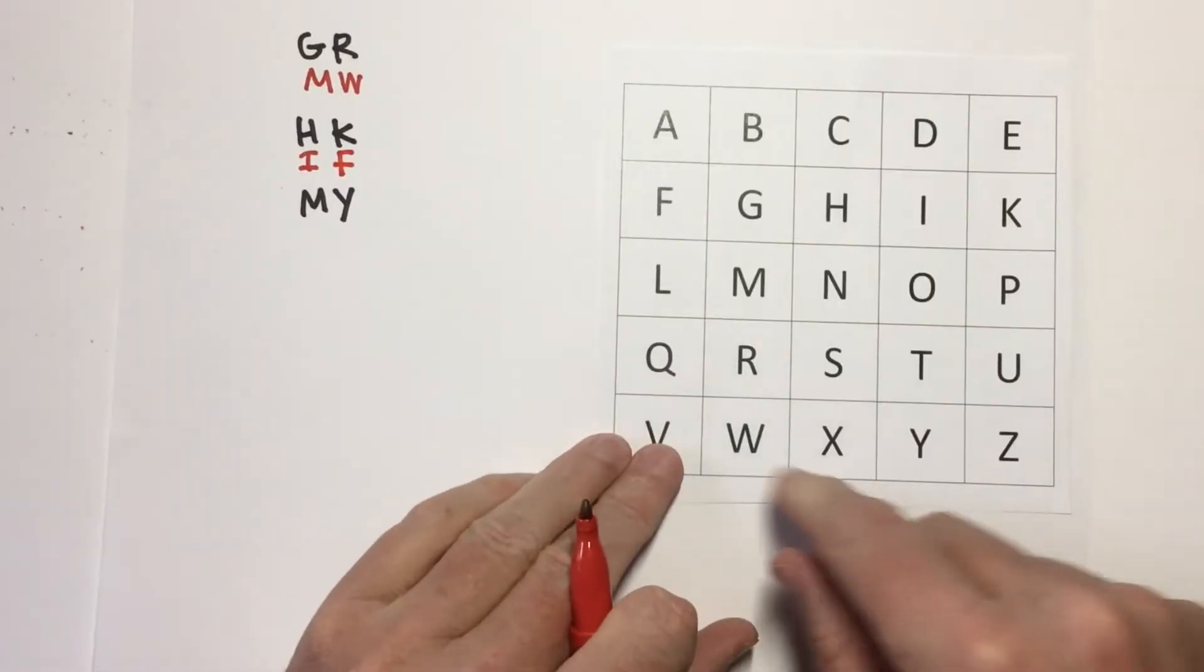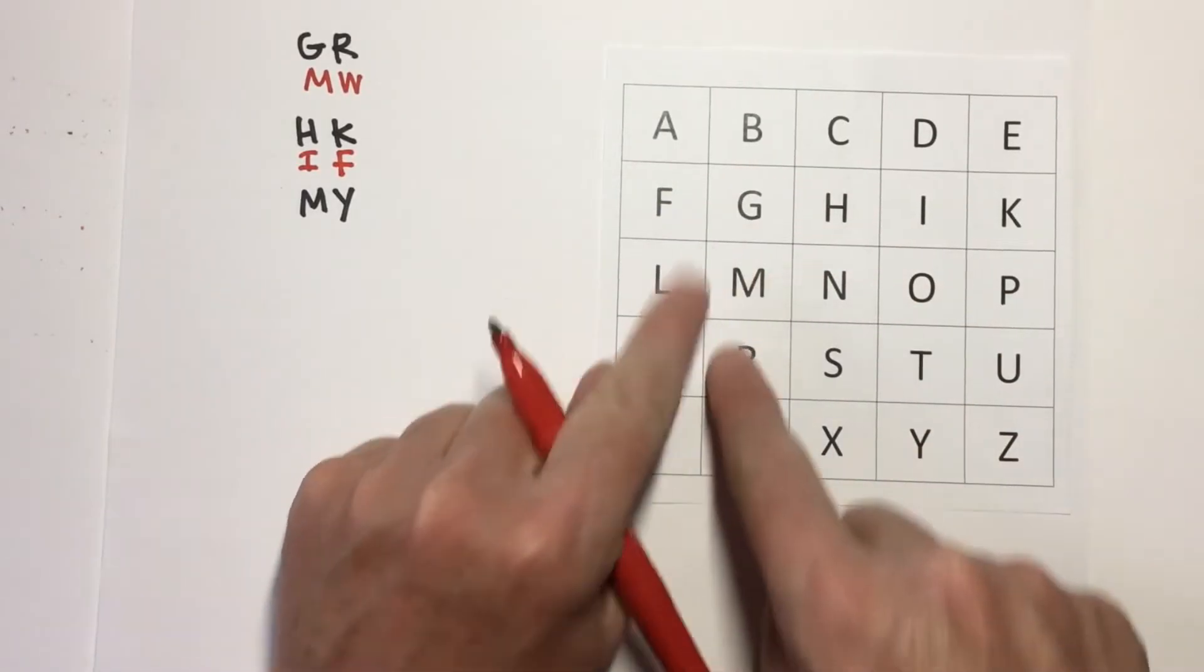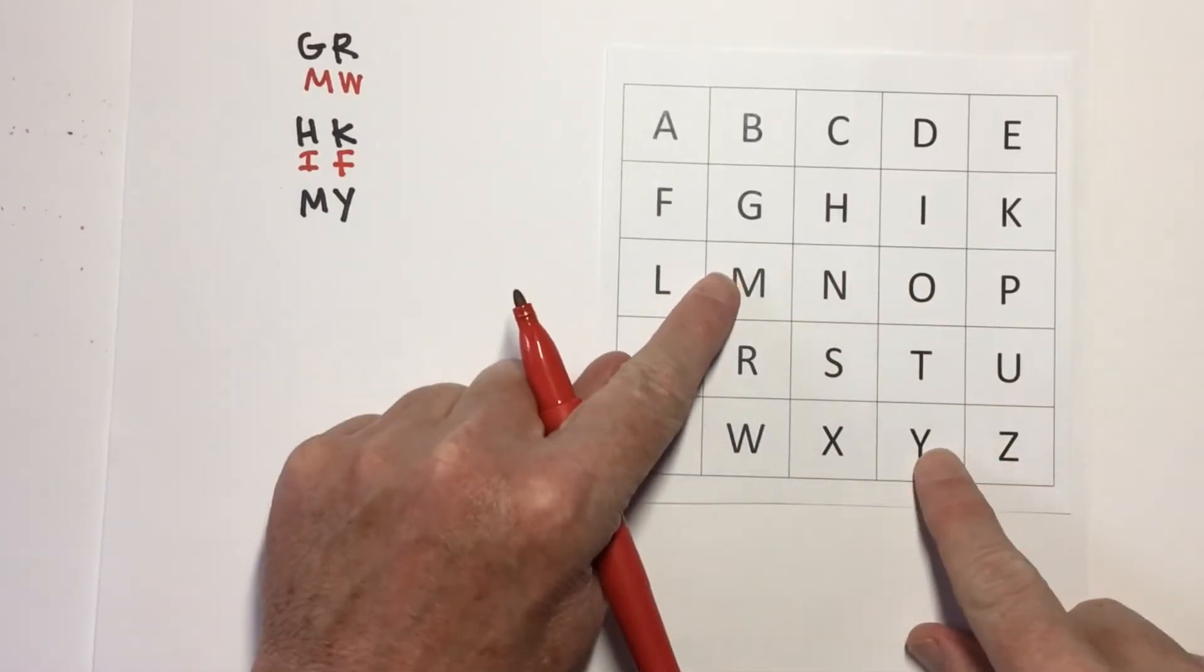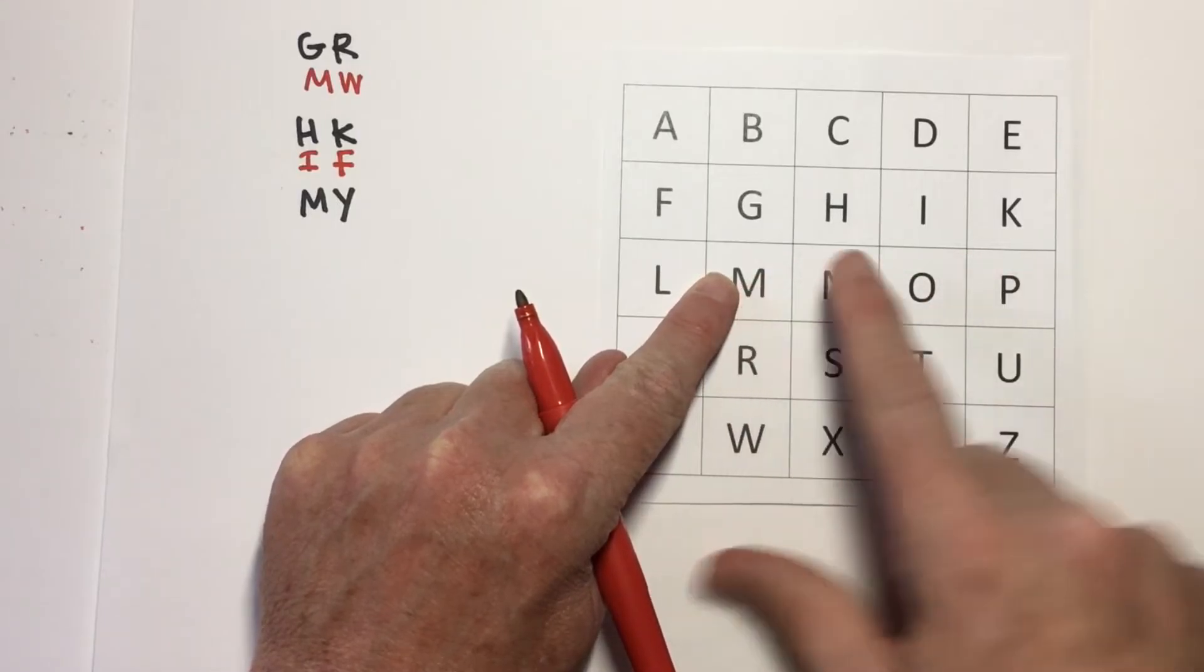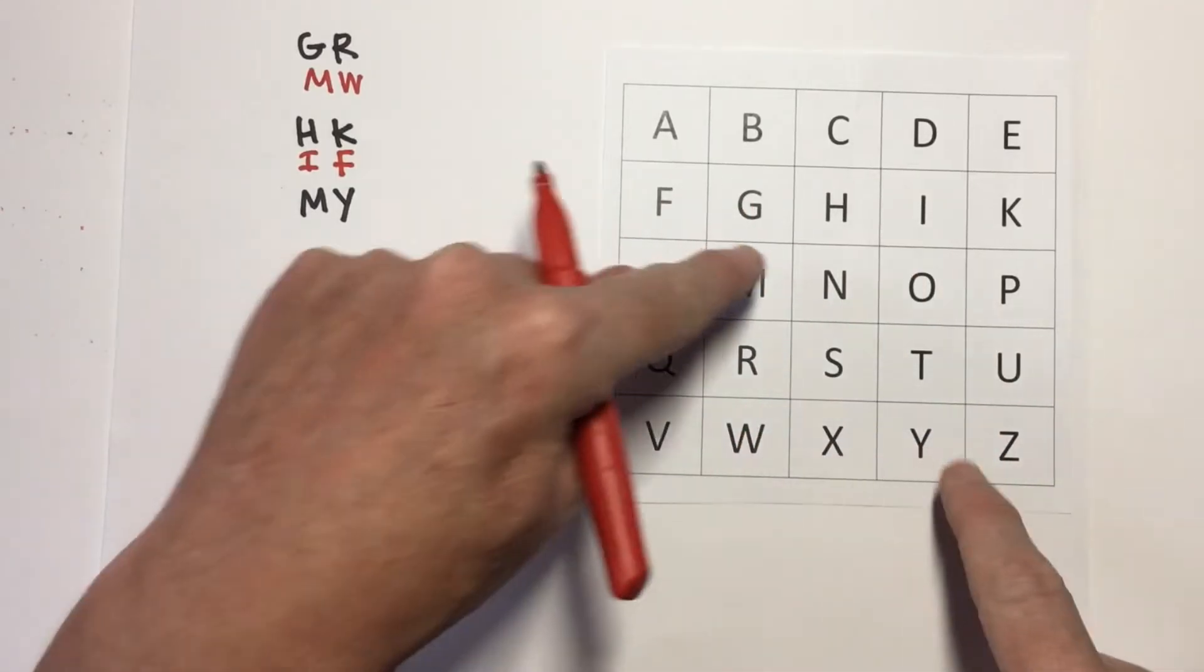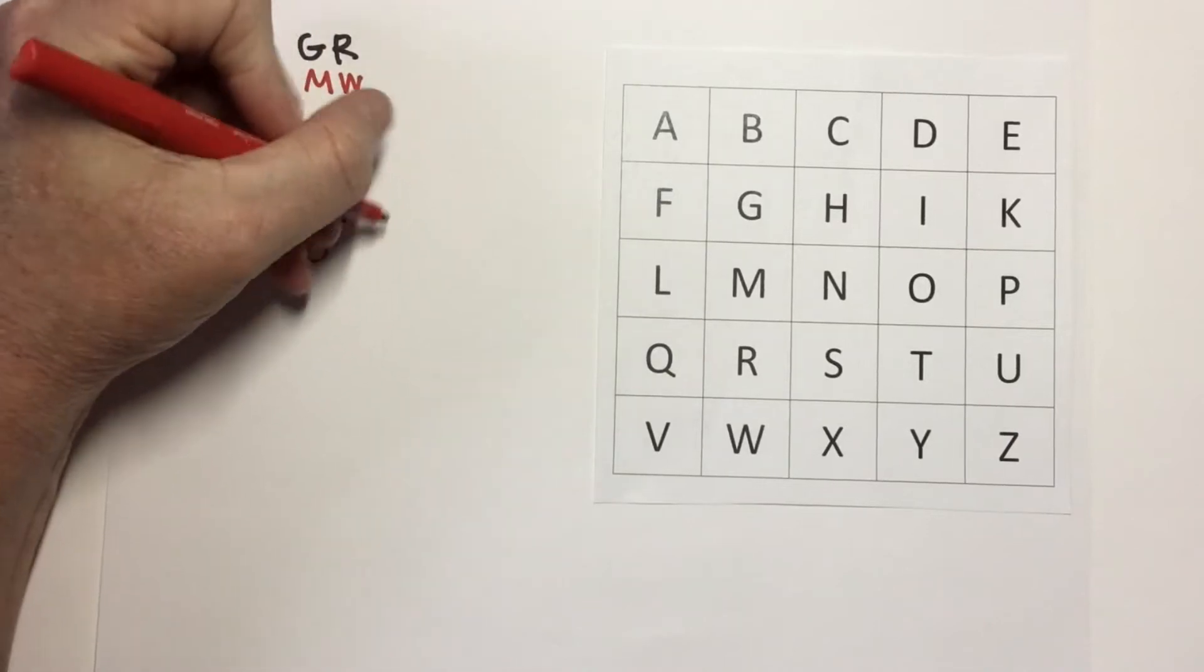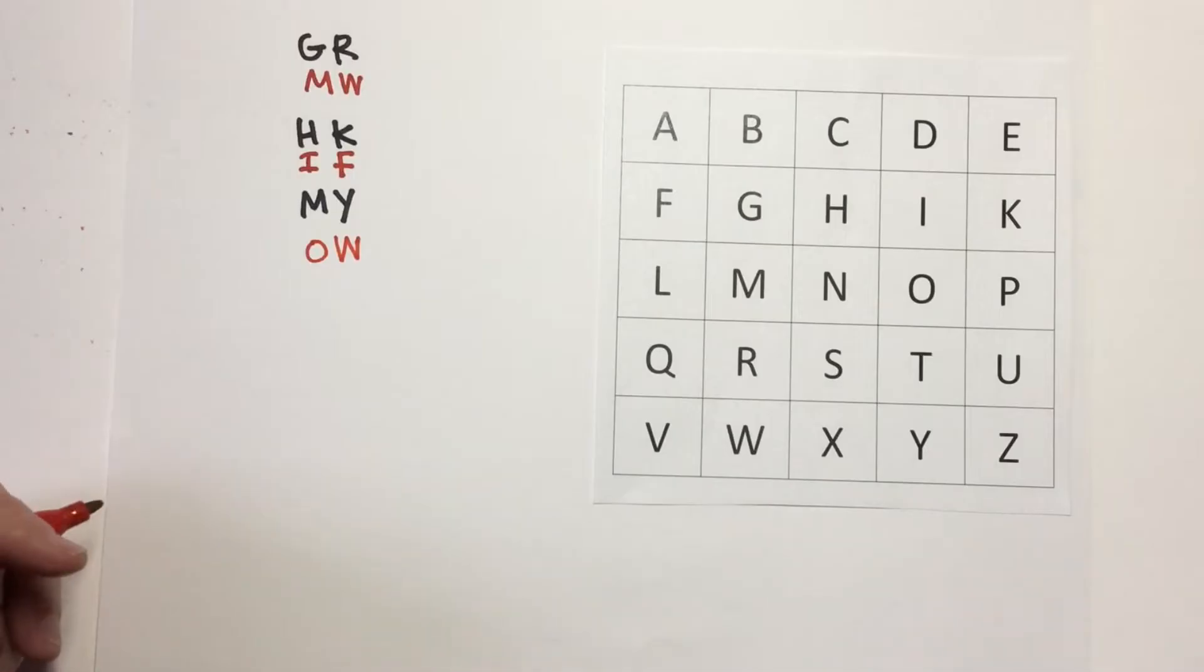And finally, in the case of M and Y, you can see they form the corners of this box right here. So, when letters form the corners of a box, I'm going to replace them with the letter that's horizontally, left and right, on the opposite side of the box. So, here's my box. So, M becomes O, and Y becomes W. M becomes O, Y becomes W. That's going to be O, Y will be W. So, that's how it works.